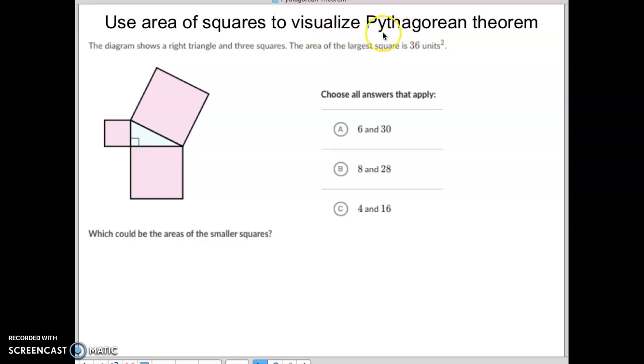We want to know what two small sides would equal the large side of 36 square units. You might remember it's a squared plus b squared equals c squared. So the large side here is our c squared, so we need to know which of these two equal 36.